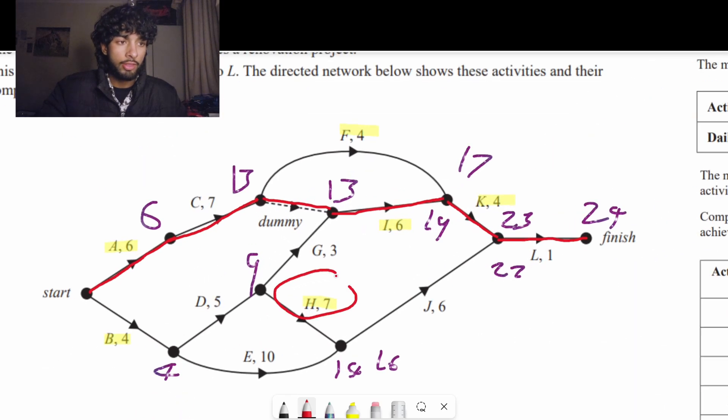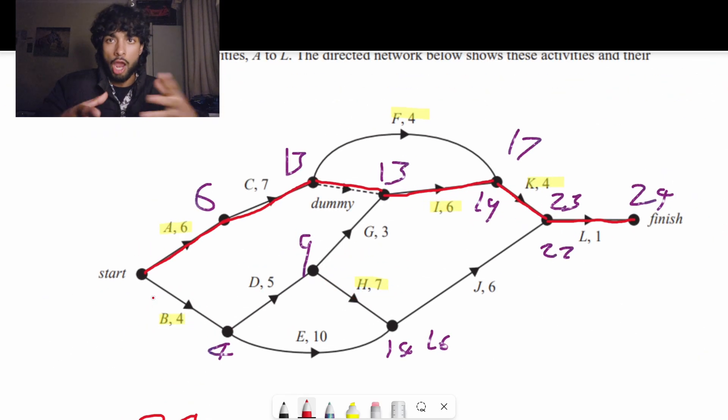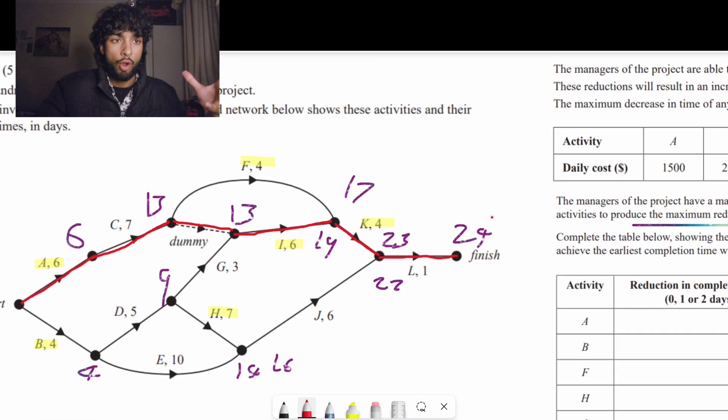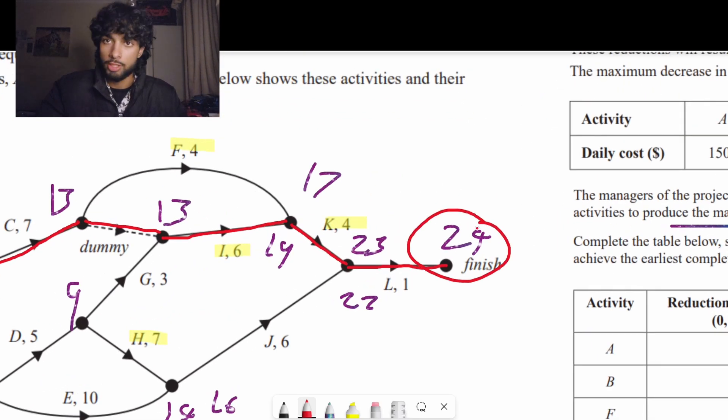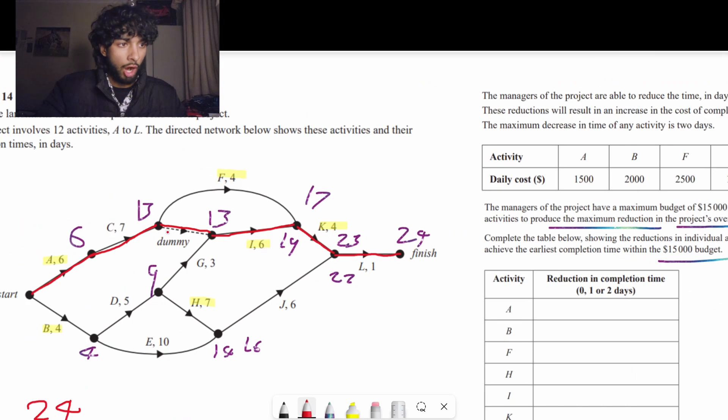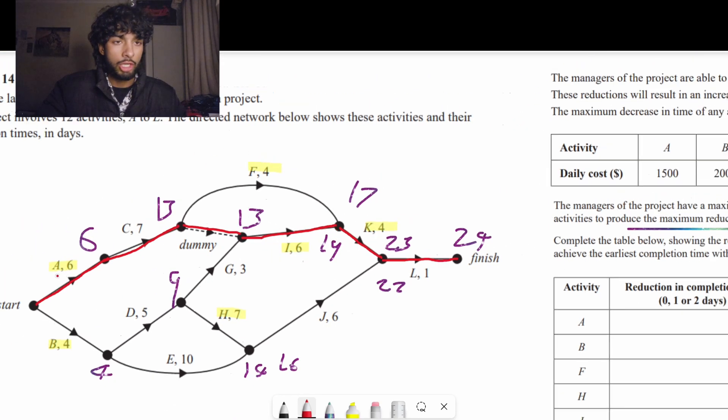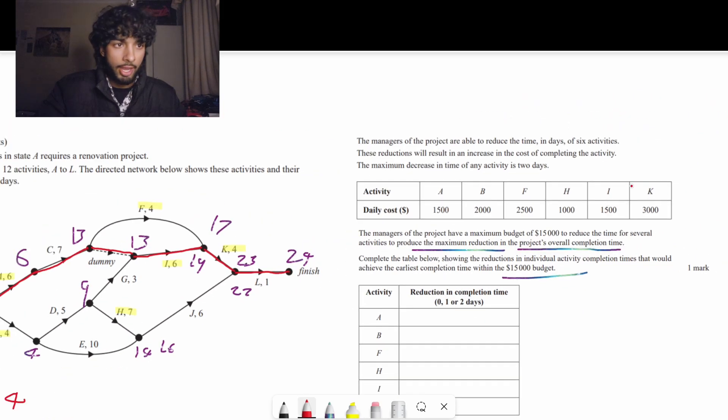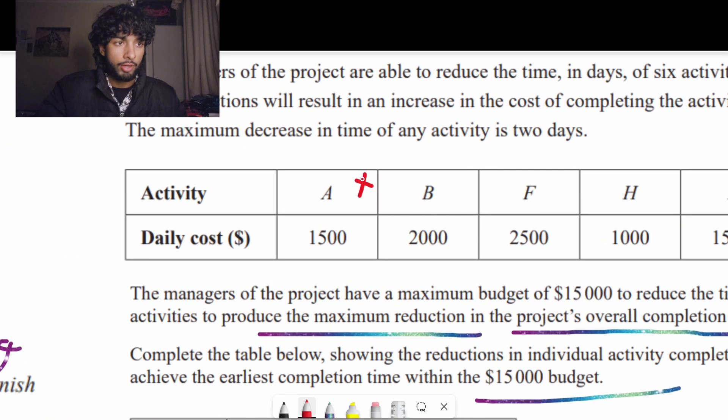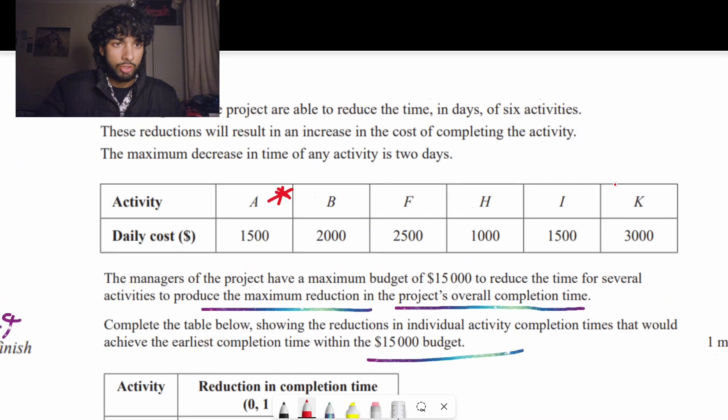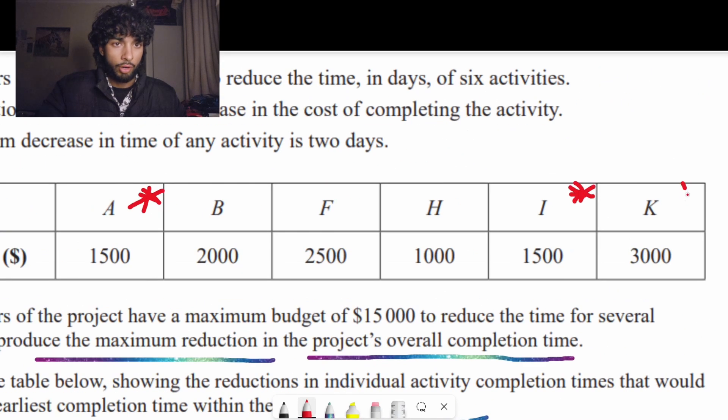Obviously we're not going to do anything with h and b because no matter how much we reduce that, the overall completion time of 24 still stands. So currently on the critical path is i, k, and a. I'll add an asterisk to show what is on the critical path right now.